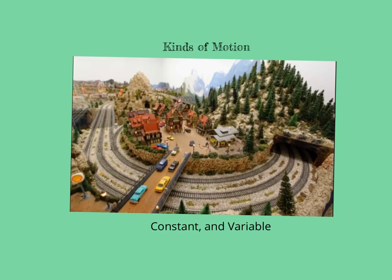Next, we're going to discuss kinds of motion. When you are riding in the car with your parents on a straight road, the speed and direction of the car is mostly constant. But if you travel on a curvy road, the car's motion is variable, which means it changes or varies. Look at the model train on the slide. When the train reaches a curve in the track, the direction of its motion changes. It may slow down as it gets around the curve and does not go in a straight line.